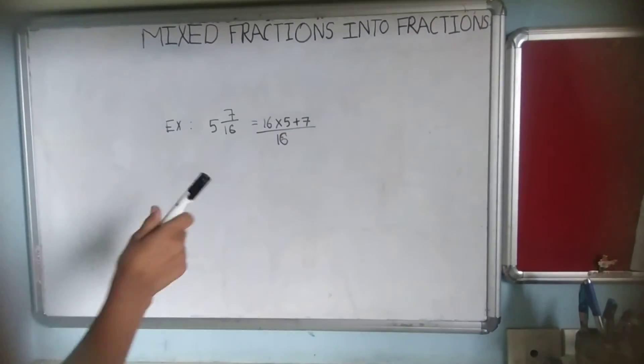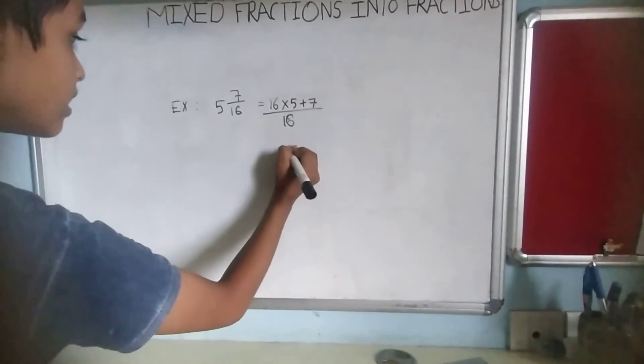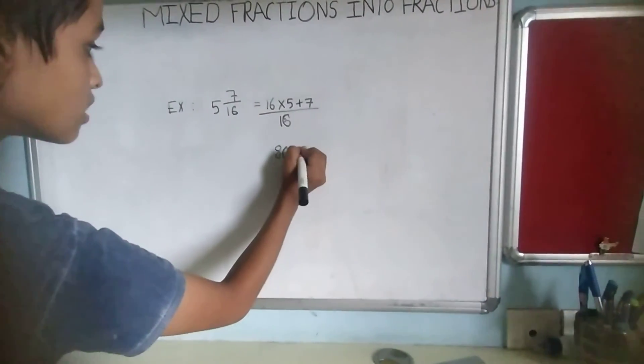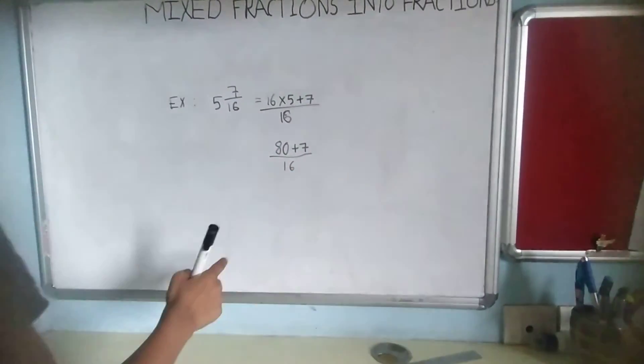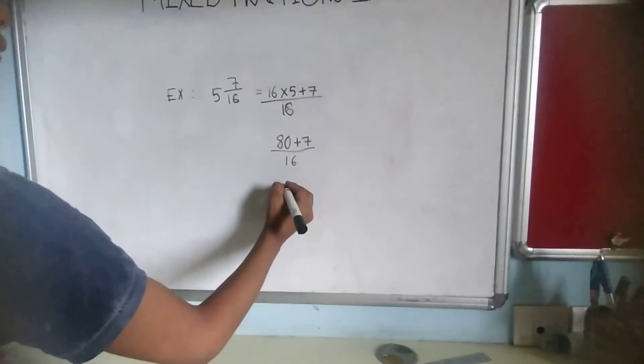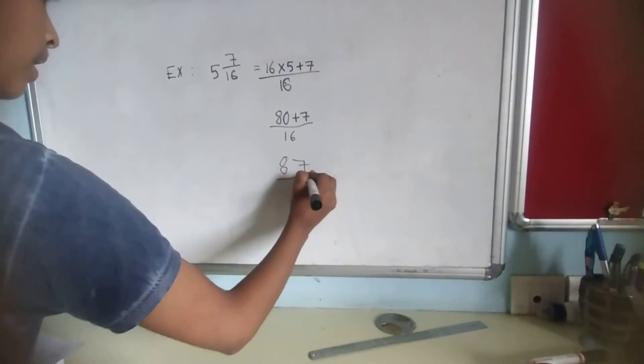Now 16 fives are 80, 80 plus 7 by 16. Now 80 plus 7 is equal to 87, 87 by 16.